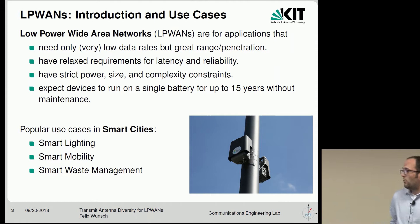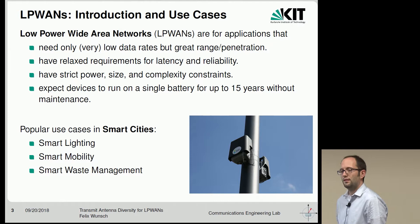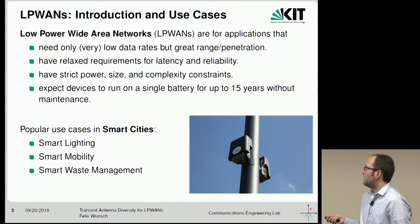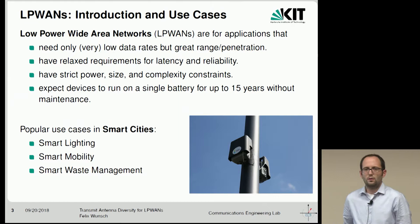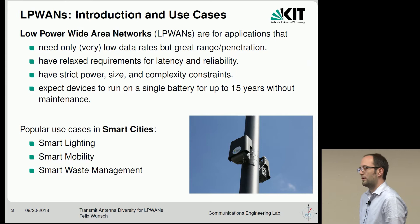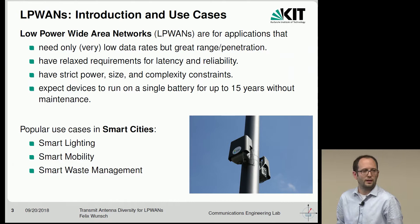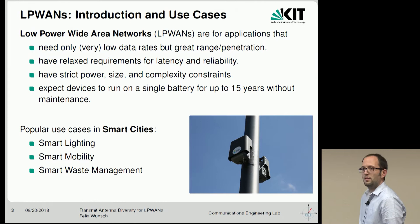Low power wide area networks, LPWANs, are a relatively recent network paradigm that has arisen to cater to applications that do not need ever-higher data rates, five-nines of reliability, or sub-millisecond latency. What they need is great range and penetration. Those networks are usually sensor networks, and another challenge is the very strict power, size, and complexity constraints. Devices need to be cheap, small, and are supposed to run off a single battery for at least five, often ten, maybe even fifteen years without any maintenance.